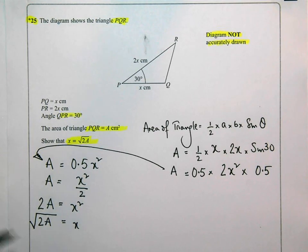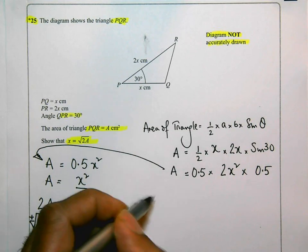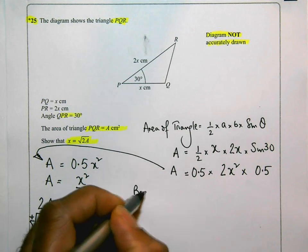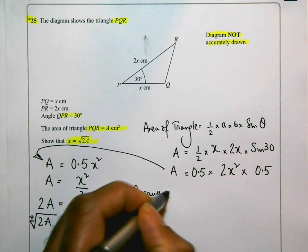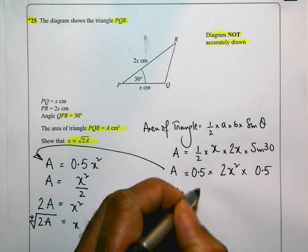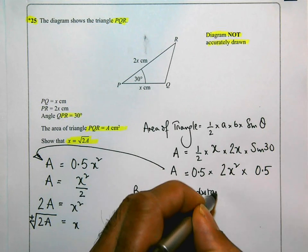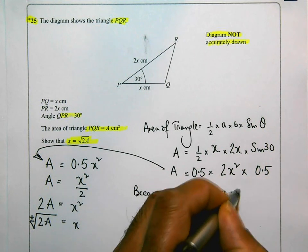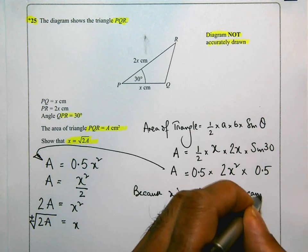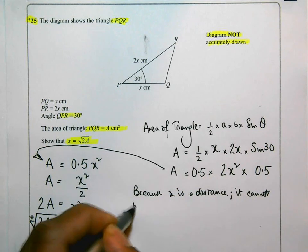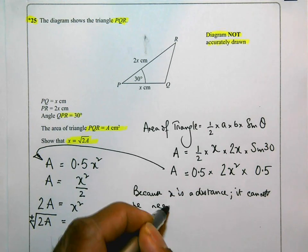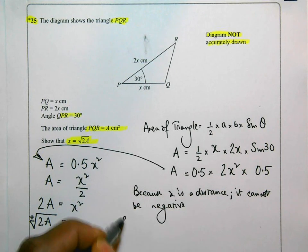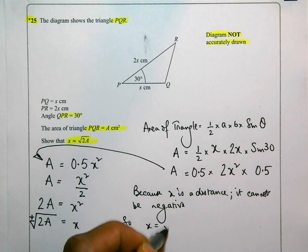Remember, when you square root something, you're going to get a positive answer and a negative answer, plus or minus. But because X is a distance, it cannot be negative. So what that means is that X is equal to the square root of 2A.